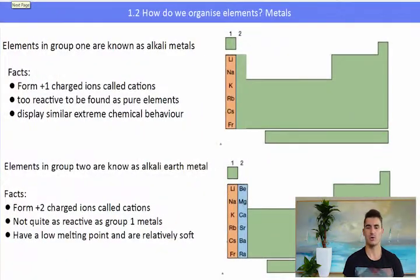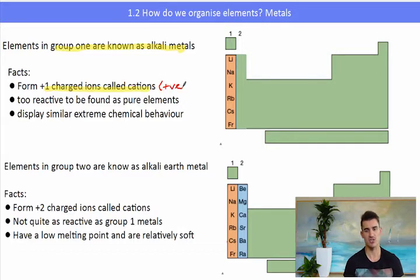The first type of metals that we want to look at are called the group 1 metals. And they are known as the alkali metals. And they have a very interesting set of chemical and physical properties. They form what we call 1 plus charged cations. A cation is a positively charged ion. It forms a 1 plus charge because it has lost 1 electron.